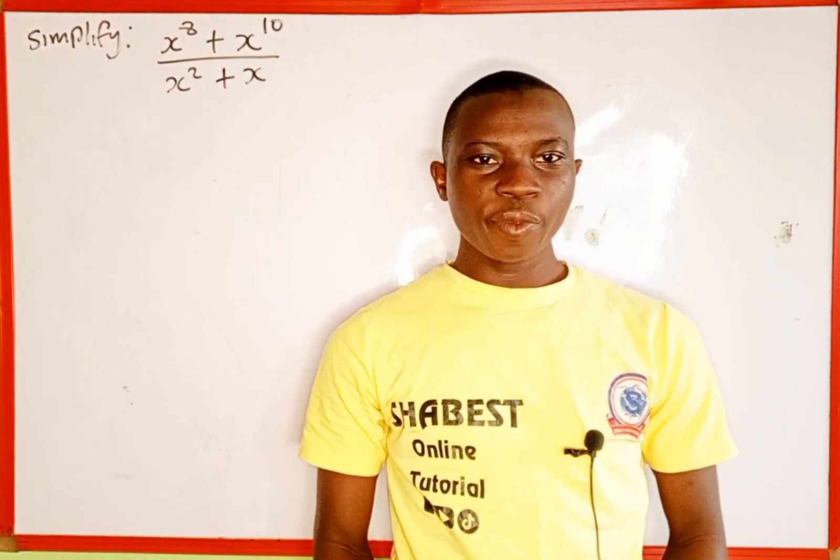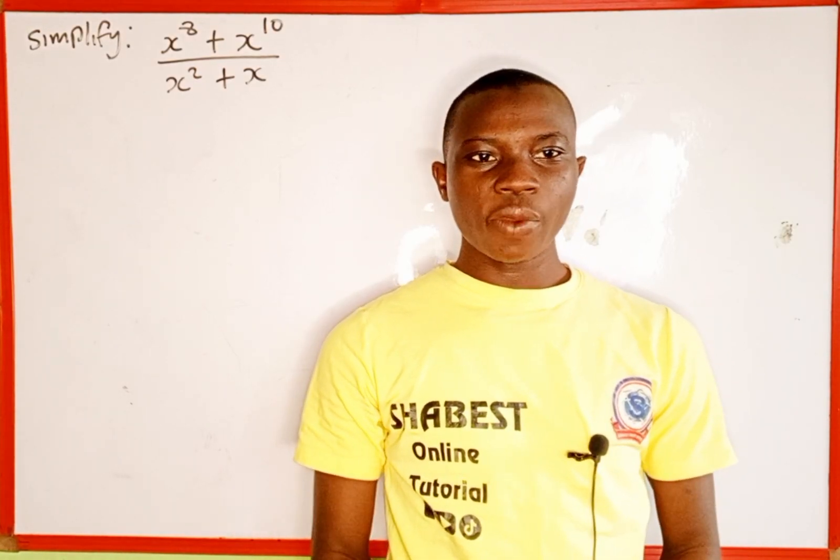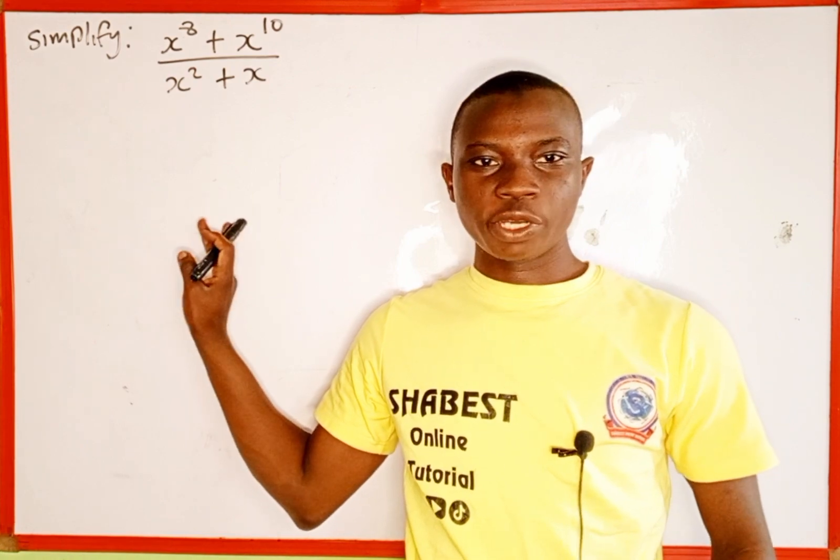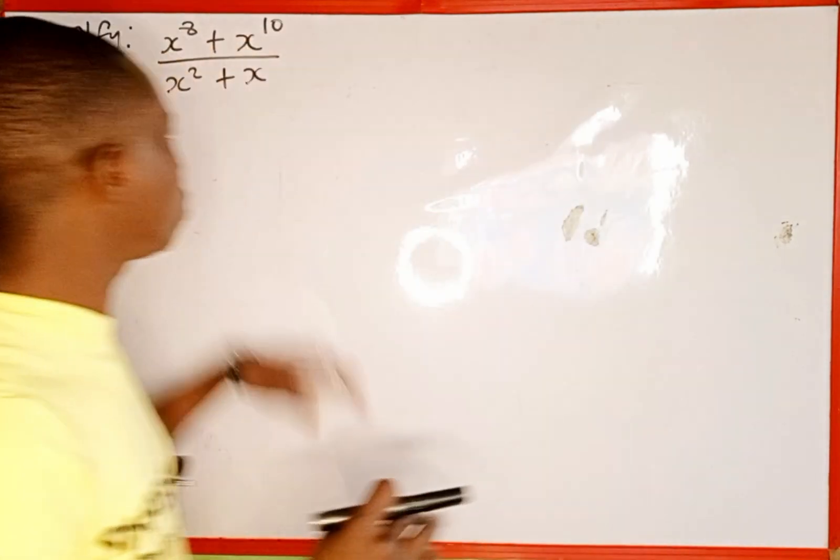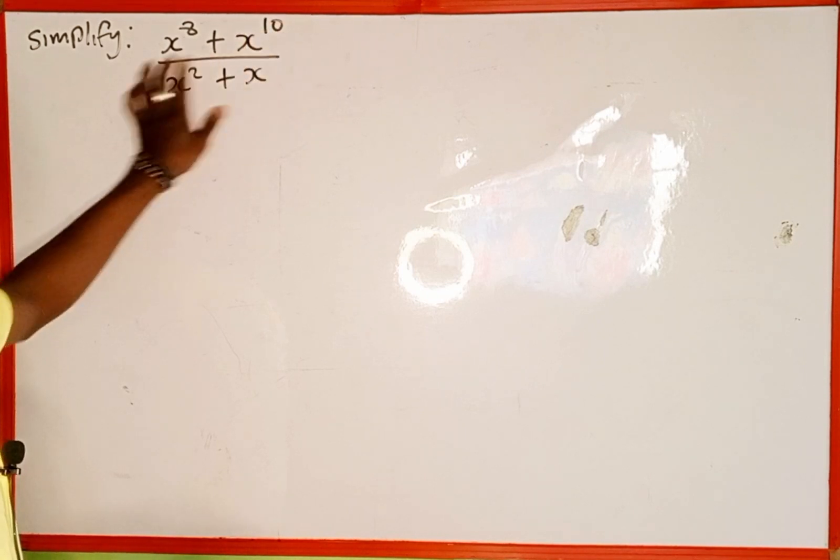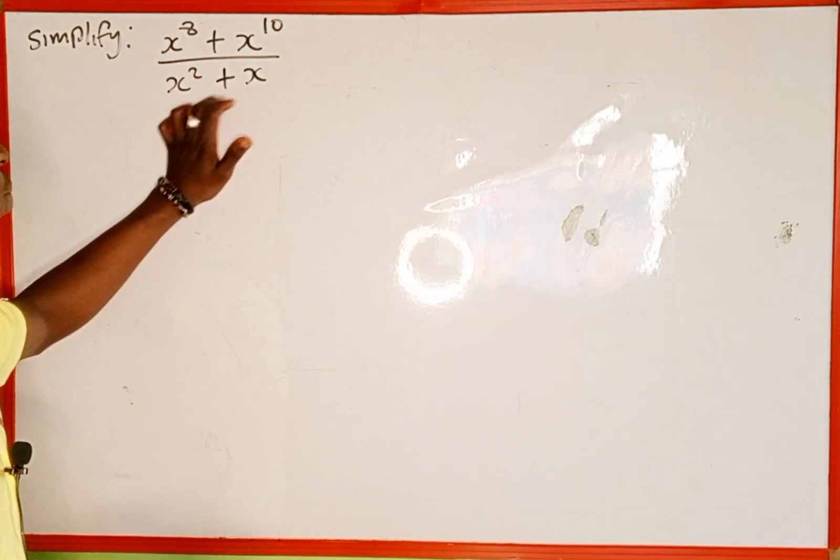Hello everyone, you are welcome back to Shabbat's online tutorial. In today's tutorial we are going to learn how to simplify this expression and devote. And the given expression is what? x to power 8 plus x to power 10 divided by x to power 2 plus x.